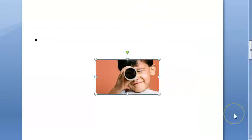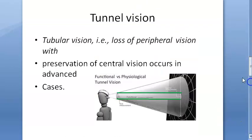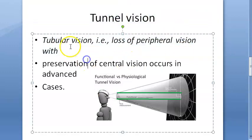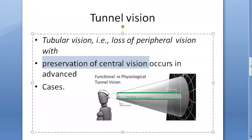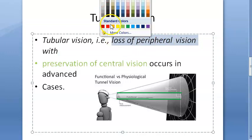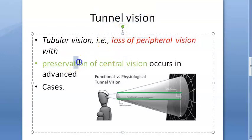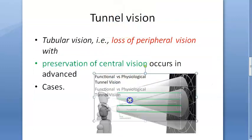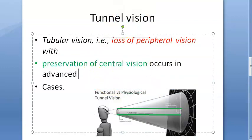Tubular vision is the loss of peripheral vision with the preservation of central vision. Central vision is preserved, but there is a loss of peripheral vision. Now, where does this occur?